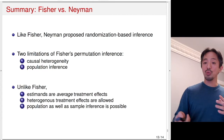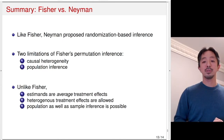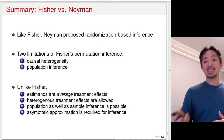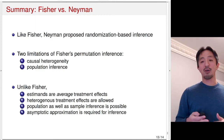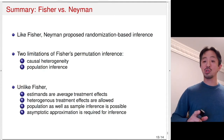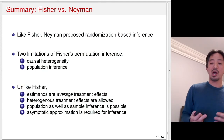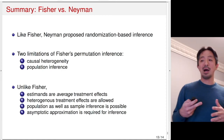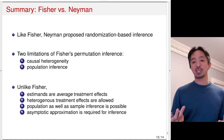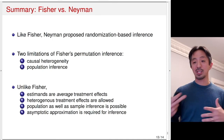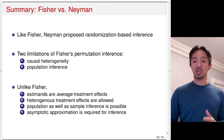We can do both population and sample inference. Like Fisher, though, we had to resort to asymptotic approximation when constructing confidence intervals — we couldn't do exact confidence intervals. The p-values will also be asymptotically approximate. There's no free lunch: there's a cost of allowing for heterogeneity and focusing on average treatment effect as opposed to conducting the sharp null hypothesis test.